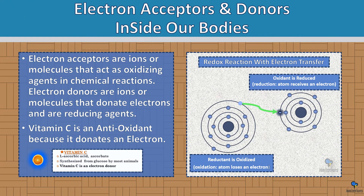Now let's talk about our bodies. Electron acceptors are ions or molecules that act as oxidizing agents in chemical reactions. Electron donors are ions or molecules that donate electrons and are reducing agents. Vitamin C is an antioxidant because it donates an electron. You can see in this image an example of electron transfer — this is what vitamin C does in your body.